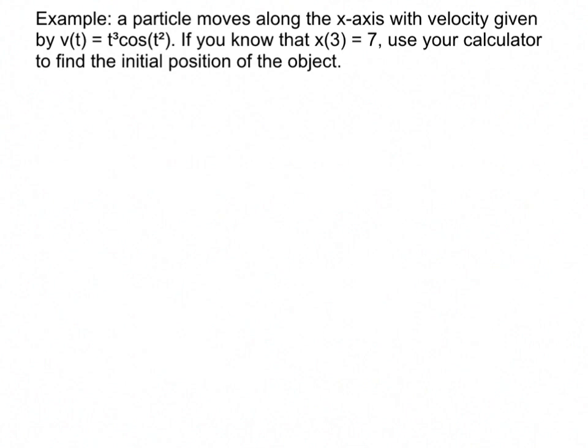A particle moves along the x-axis with a velocity given by that thing, t cubed cosine of t squared. If you know that x of 3 equals 7, use your calculator to find the initial position of the object.